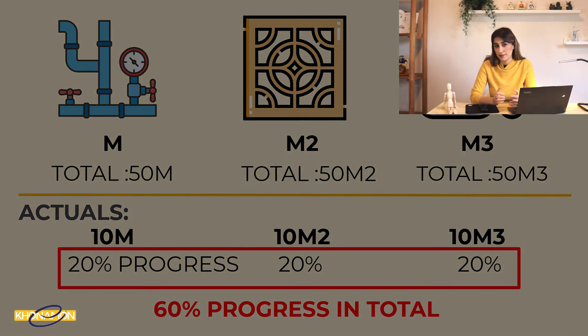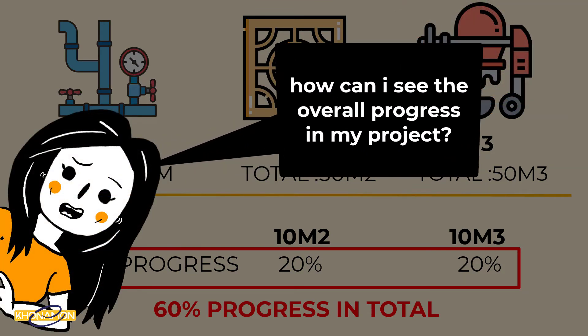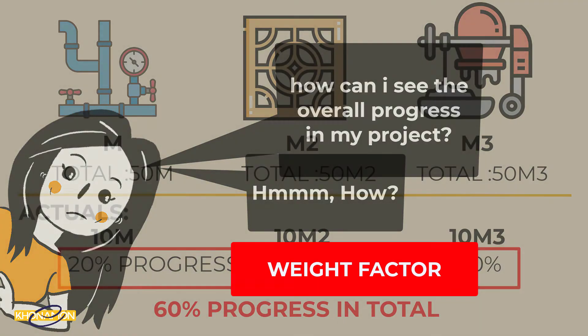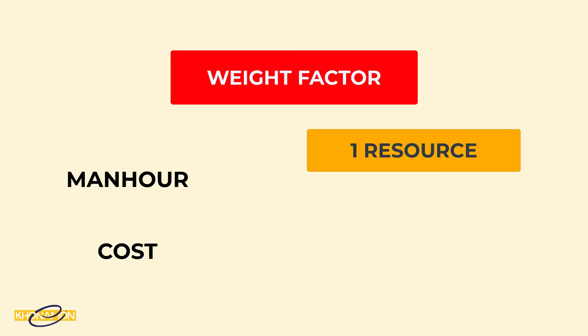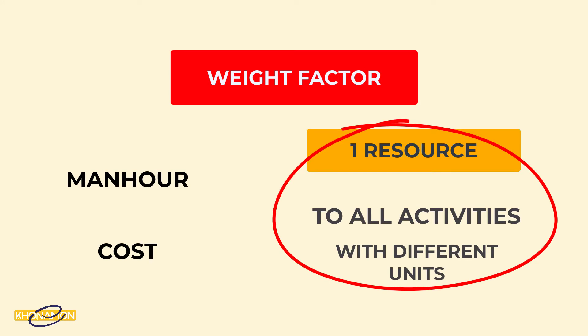Absolutely not. How can I see the overall progress in my project? Here, the weight factor shows itself to help us. Weight factor relies on two items: man hours and cost. Here, we assign just one resource to all these activities with different units. Instead of assigning a bunch of resources to one activity, we just assign one resource. It is called virtual resource.